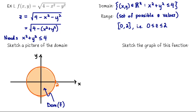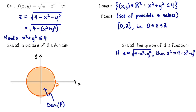Now let's sketch the graph of this function — it's the set of points (x, y, f(x,y)). If we take z equals √(4 − x² − y²) and square both sides, we get z² = 4 − x² − y², which rearranges to x² + y² + z² = 4. So the graph of this function is a subset of the sphere of radius 2 — we often denote the radius by rho.